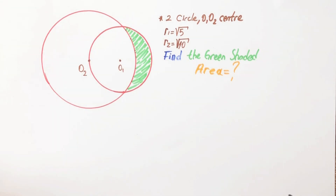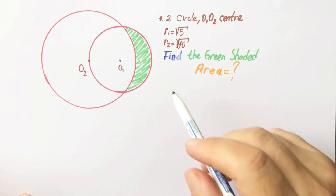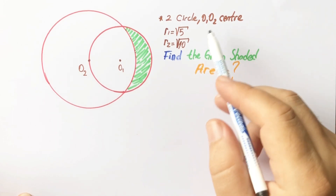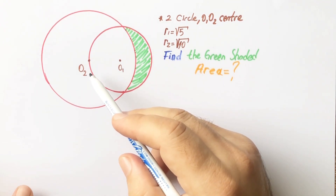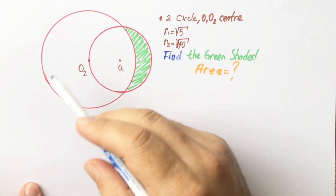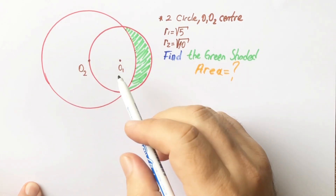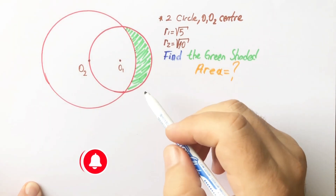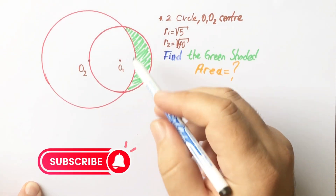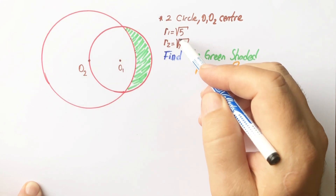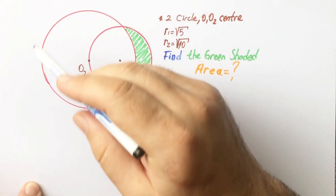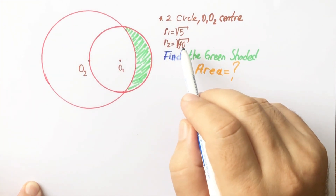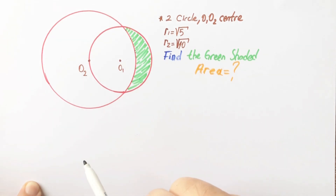Hello everyone. In this video we have two circles, and O1, O2 are the centers of these circles. The radius of the small circle equals √5 and the radius of the large circle equals √10.